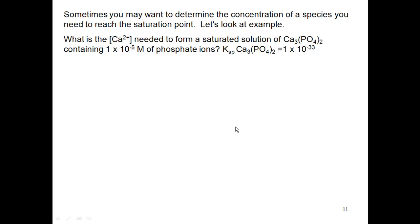What we're saying here is I have some flask. In that flask, I have 1×10⁻⁵ molarity of phosphate ions. I want to know how much calcium I can add to that before I pass the saturation point and start forming calcium phosphate.